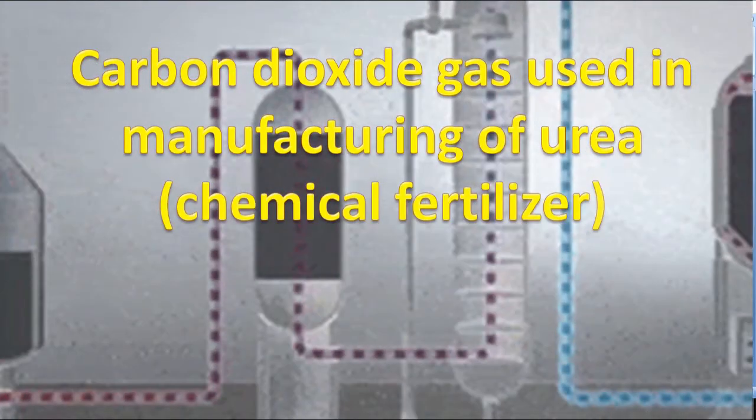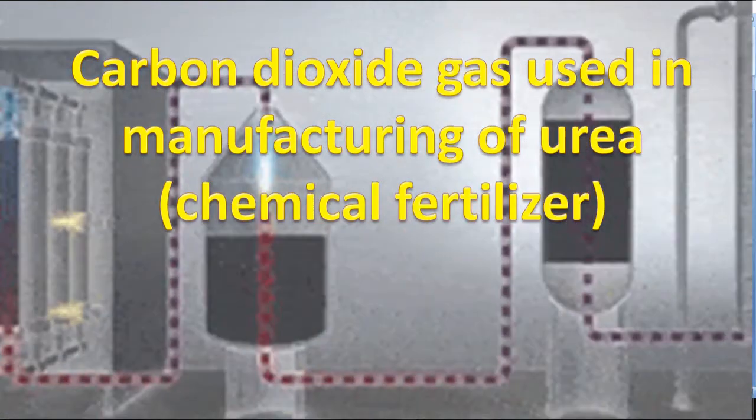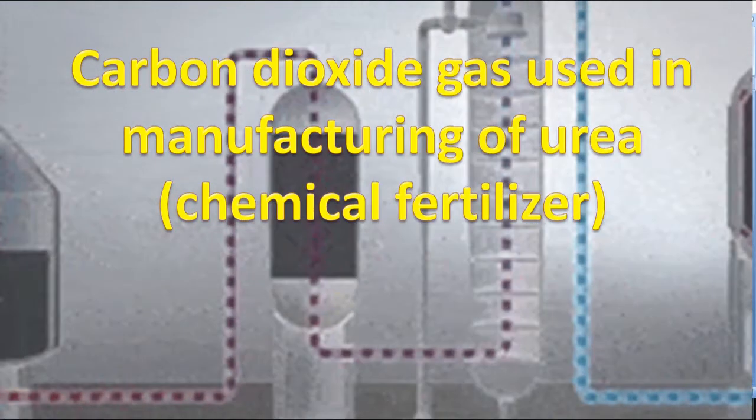Carbon dioxide gas is used in manufacturing of urea which is nitrogen rich chemical fertilizer needed for growth and development of plant.